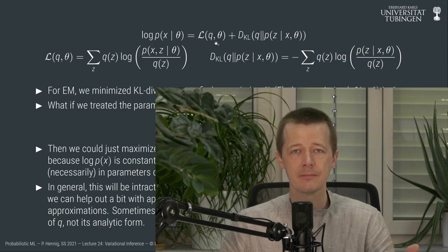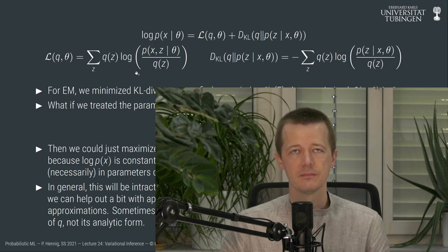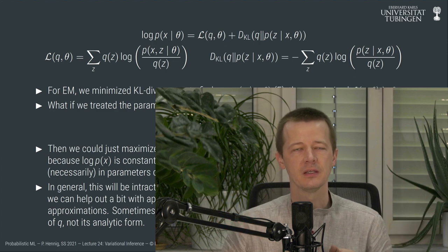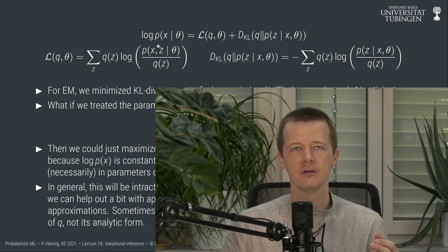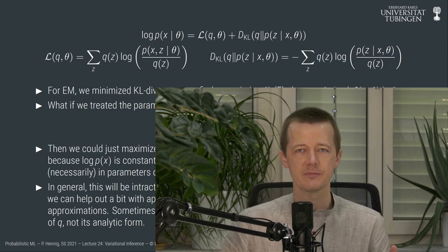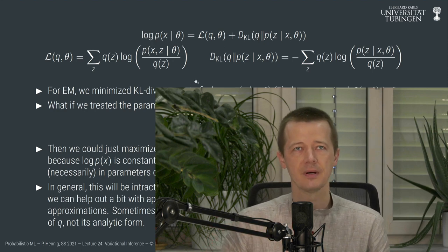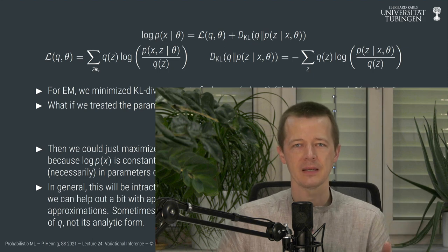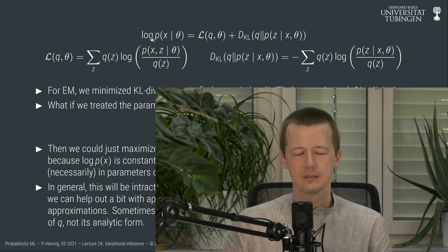We can then maximize the ELBO as a function of theta instead of the log marginal likelihood. This is easier because the ELBO has the sum outside of the logarithm — so instead of computing the logarithm of an expected value, we compute the expected value of the complete data log likelihood, and maximize that with respect to theta. This algorithm is called the EM algorithm for expectation maximization.